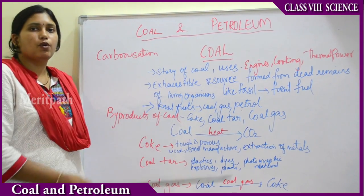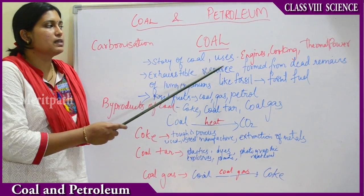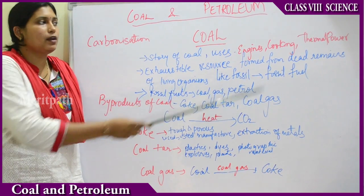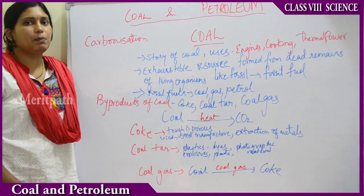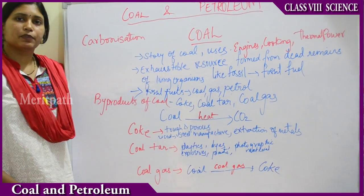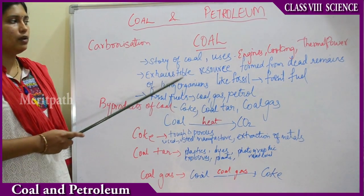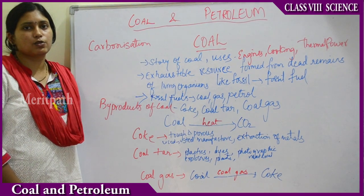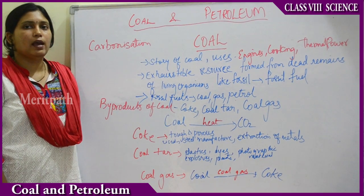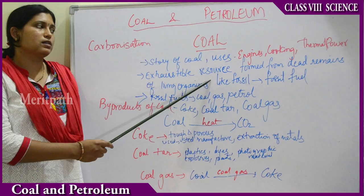What are the main uses of coal? Earlier, and even now in the northern parts of India, steam engines and train engines run with coal. It is also used for cooking purposes. For the production of electricity in thermal power plants, coal is also used. Coal is an exhaustible resource — it is limited.